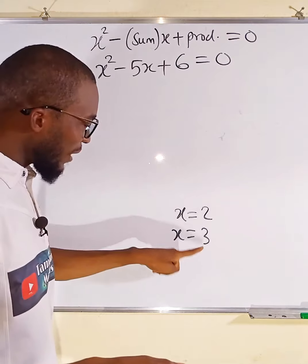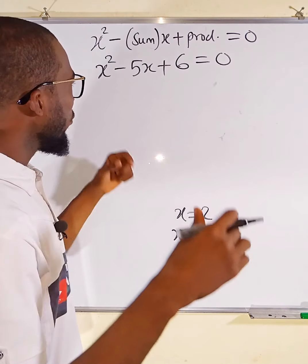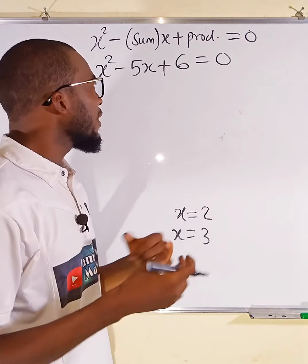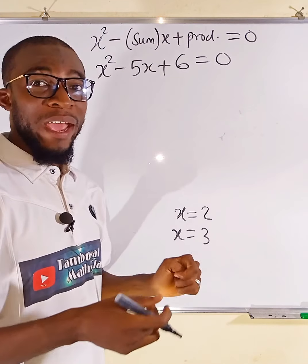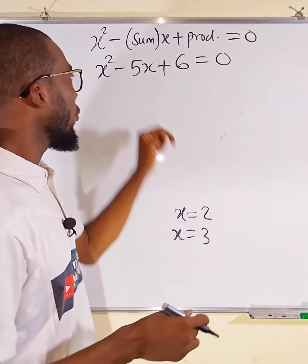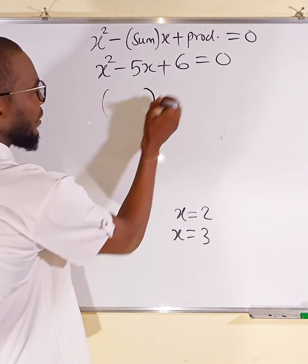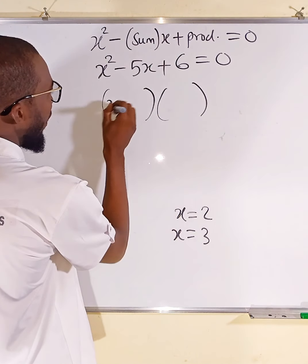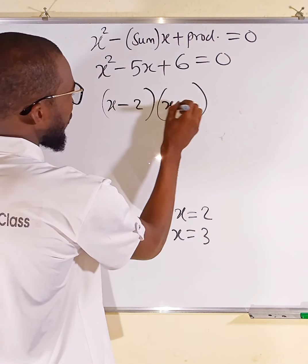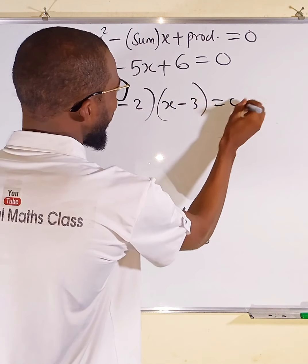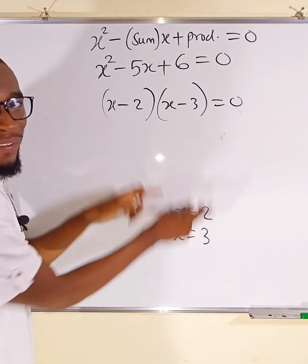And if you solve this, you must get these values. Because now let us think of two numbers which, when we multiply them together we get 6, and when added up together we get negative 5. The numbers will be (x minus 2)(x minus 3). If you set each of these equal to 0, you are getting x equal to 2 and x equal to 3.